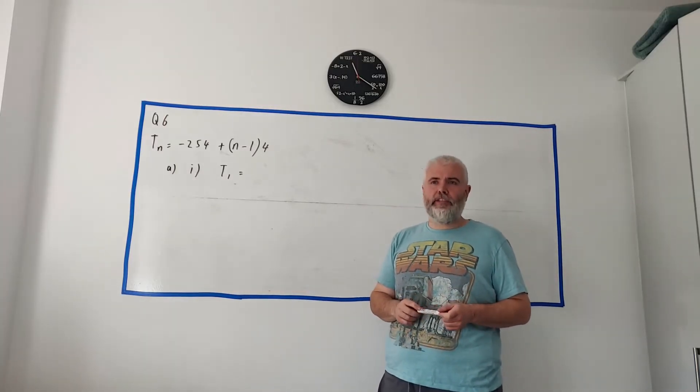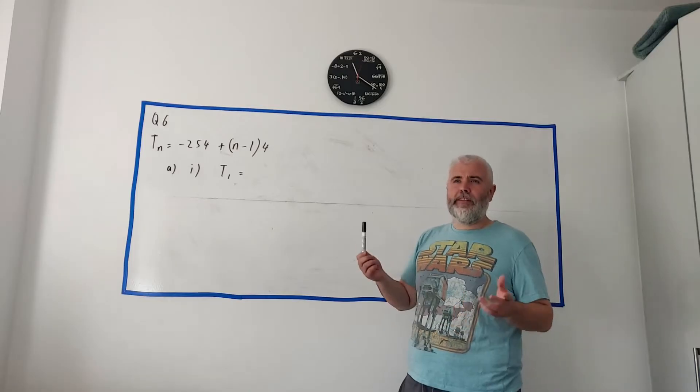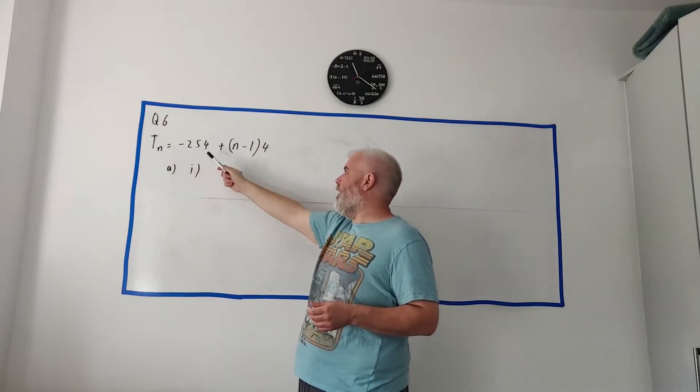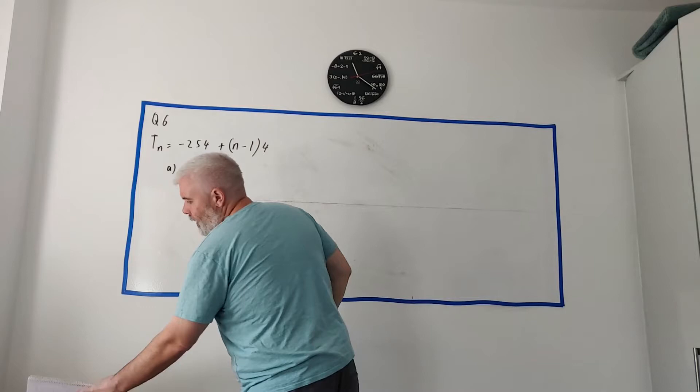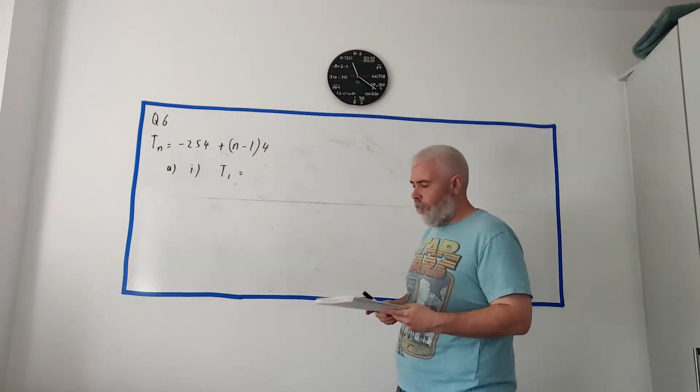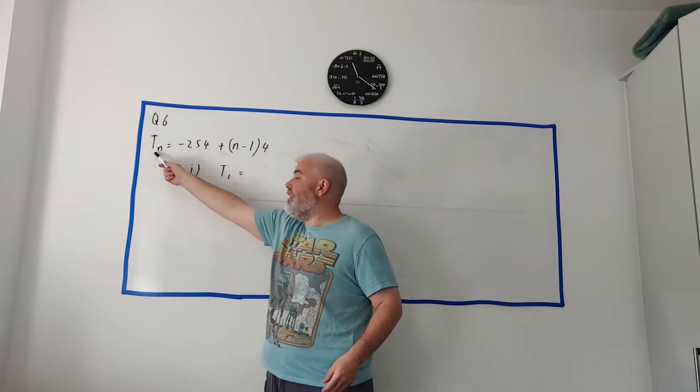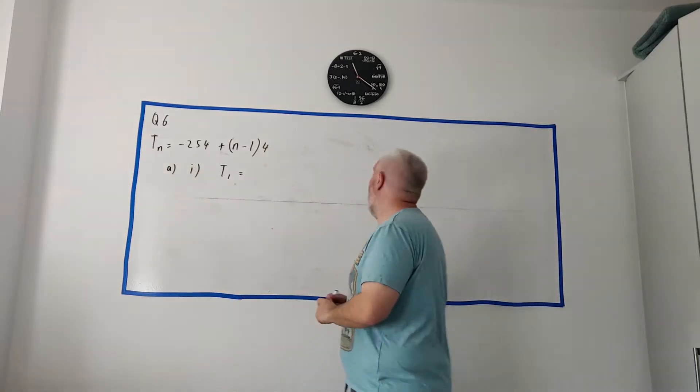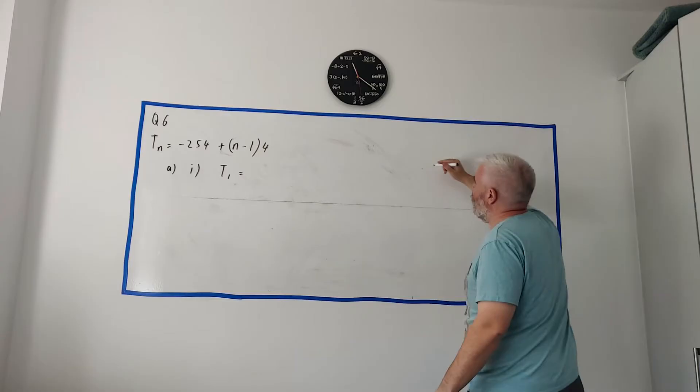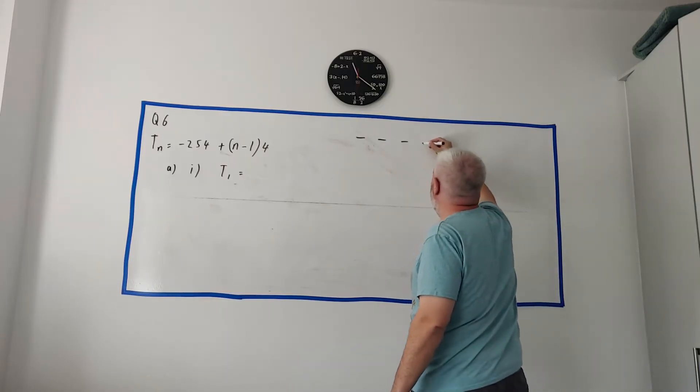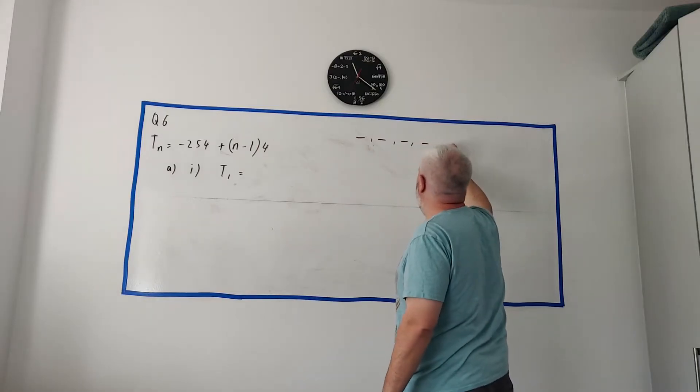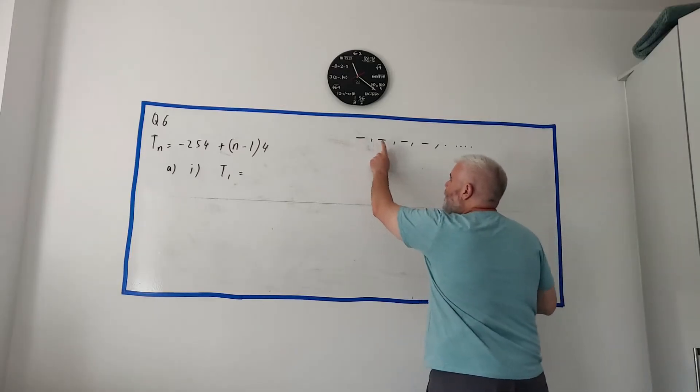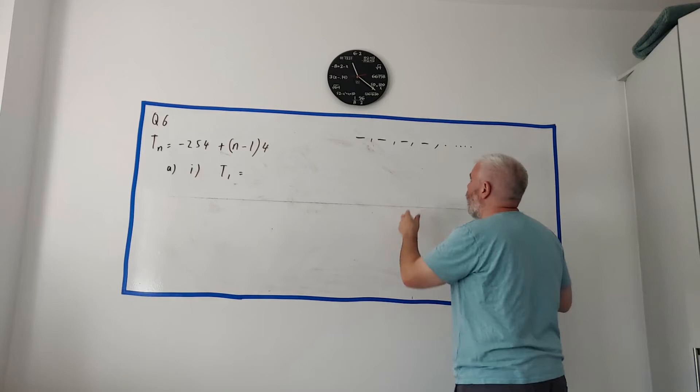It's going to be a sequence and series question. Part A gives us this formula here for Tn equals minus 254 plus n minus 1 multiplied by 4. And this is quite common to see this. Tn and Sn, you see these in a lot of questions. All this is saying is it's giving you every term. I'm going to write the terms up here because I'm going to use them a lot. The first term, the second term, the third term and so on. This is T1, this is T2, the first term, the second term, the third term.